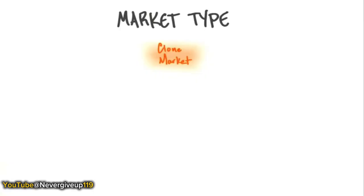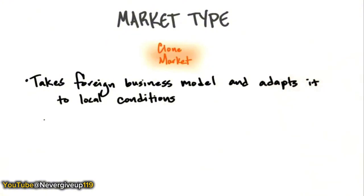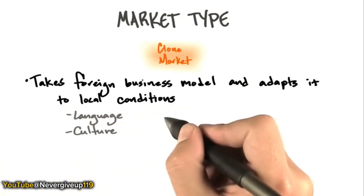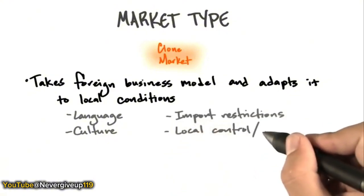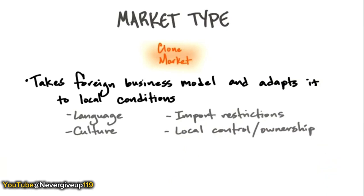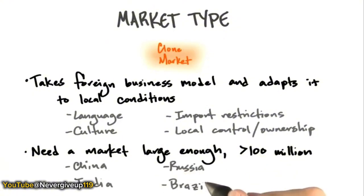The clone market takes foreign business models — typically from the U.S. — and adopts them to local conditions. A local condition means your language is different from English, your culture differs from the U.S., your country has import restrictions or local ownership rules, and your market is large enough to support a business model. Countries with north of 100 million people that fit this criteria might be China, India, Russia, Brazil, or even the EU. Just cloning U.S. business models is not a bad business strategy.